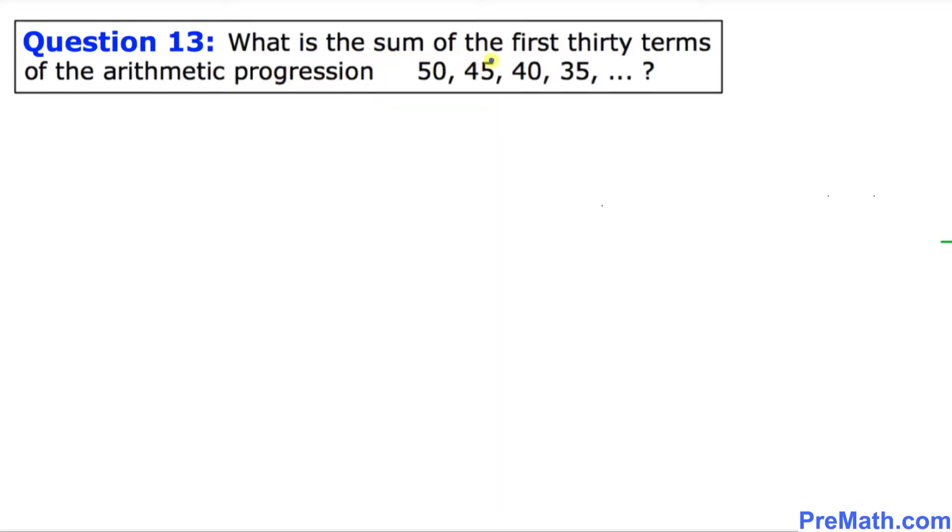What is the sum of the first 30 terms of this given arithmetic progression? 50, 45, 40, 35, and goes on and on.